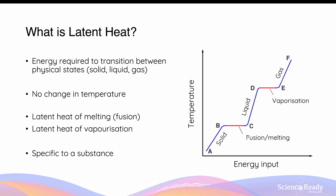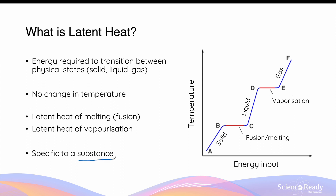Once all of the liquid has been converted to gaseous form, further energy input results in further temperature increase in the gaseous state. The energy required to transition between solid and liquid state is the latent heat of fusion or melting, and the energy involved to transition between liquid and gaseous state is the latent heat of vaporization. Both types of latent heat are specific to a substance.